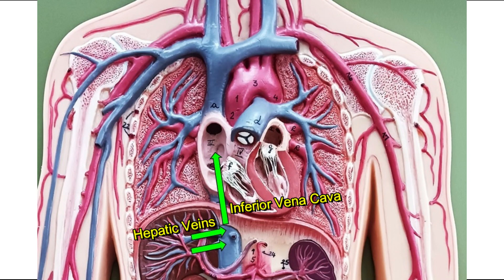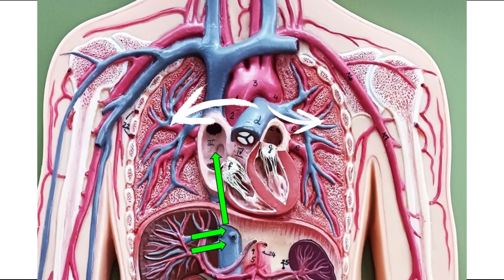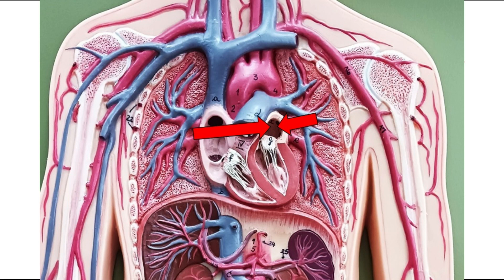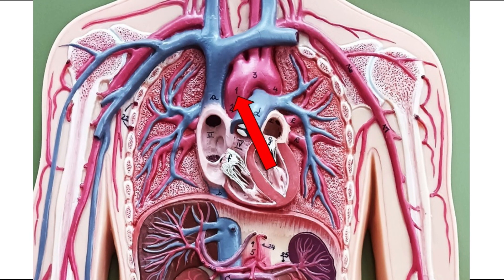From the inferior vena cava, amino acid molecules in the bloodstream are transported to the right side of the heart, specifically the right atrium. The right side of the heart sends blood to the lungs, where it becomes oxygenated, then it returns to the left side of the heart. Finally, the left ventricle pumps this blood, full of different nutrients, to our tissues and systems. I hope you find this helpful.